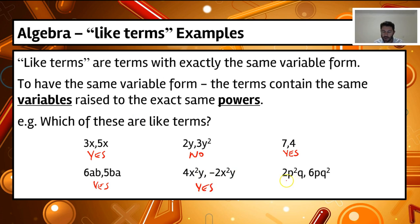Now, in our last one, we've got 2p squared q and 6pq squared. Now, we've got a p. Yeah, there's a p on both sides, but the p's on this side is raised to the power of 2, where on this side it's not, so it can't be a like term. So that one isn't a like term.